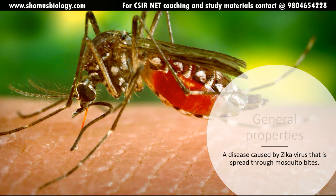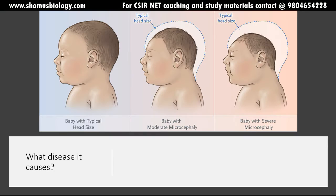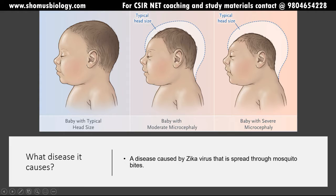The very first thing is the general property: the disease caused by Zika virus is spread through mosquito bites. It is a viral infection, and in very simple cases it causes fever and associated symptoms of muscle ache, body ache, headache, pain, and malaise. But it may also cause more serious conditions, which we will now look at.